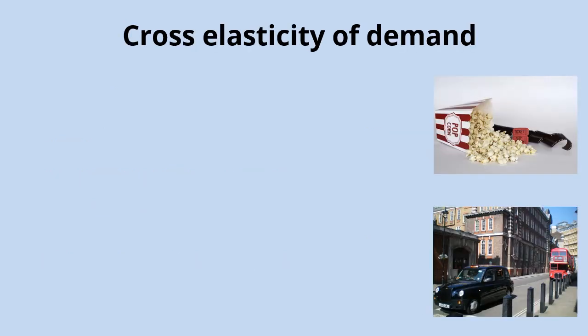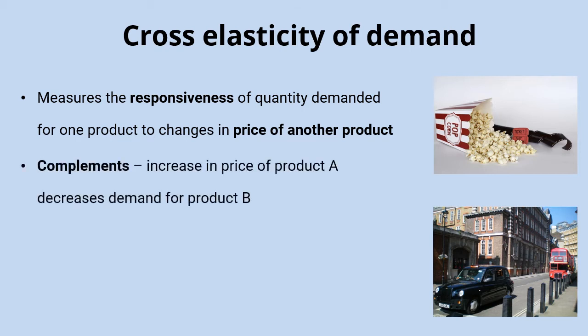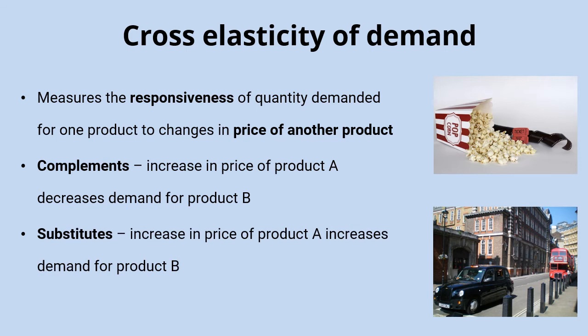Moving on to cross elasticity of demand: this measures the responsiveness of quantity demanded for one product to changes in the price of another separate product. Rather than looking at changes in income, we look at the impact of a price change in a different product. This can categorize products as complements or substitutes. For complements, an increase in the price of one product leads to a decrease in quantity demanded for the other — for example, if cinema ticket prices rise, fewer people go to the cinema.